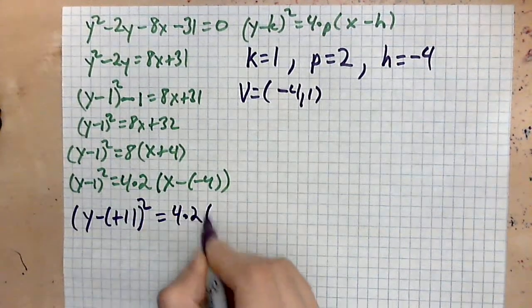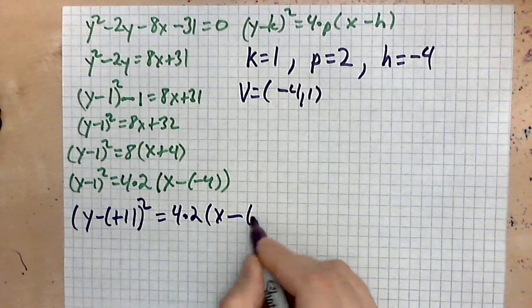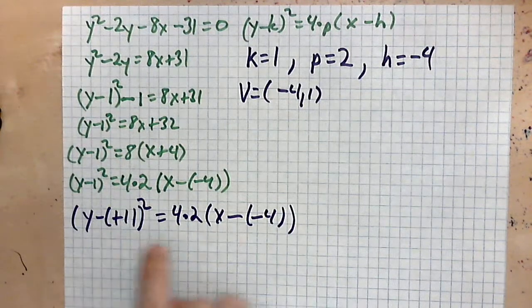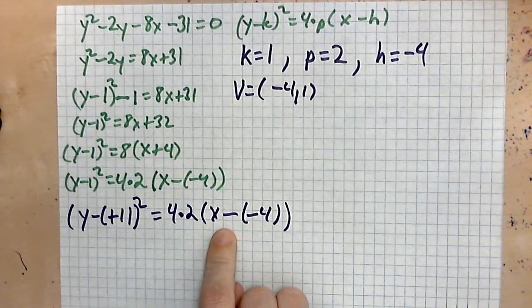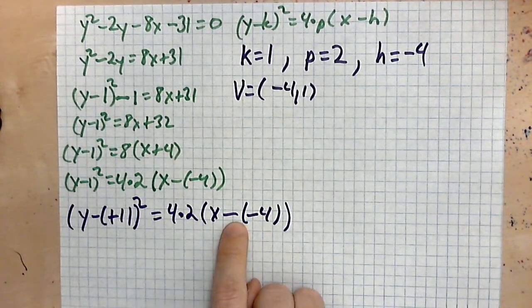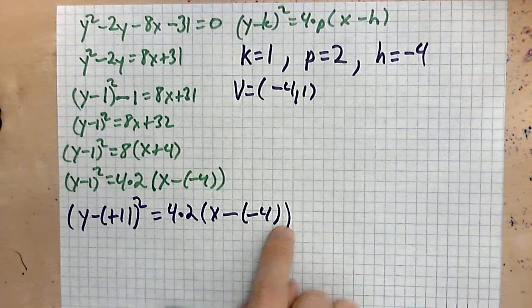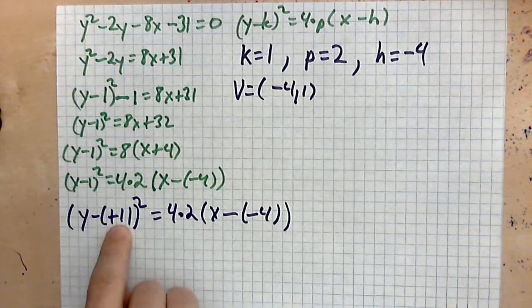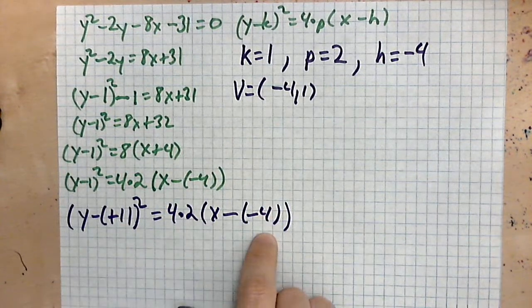It equals four times two, and then x minus negative four. You see how many parentheses I have? The objective is to identify these key pieces of information correctly. So you've got to write in the parentheses as you see here. Then you see k is one and h is negative four.